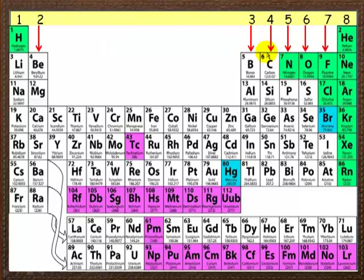Over here group 3, 4, 5, 6, 7 and 8. This is sometimes called 0, 8 or 0. Notice this big chunk here in the middle, they're not given group numbers. These are your transition metals that we'll come across in another video.